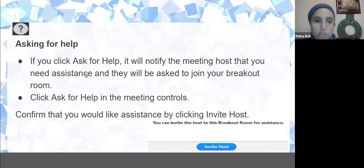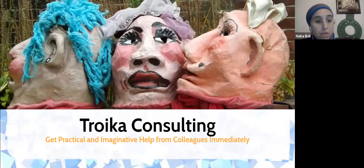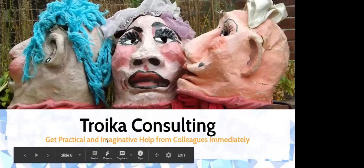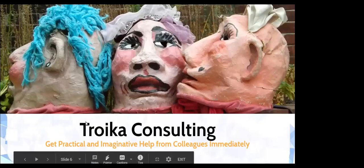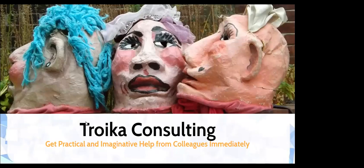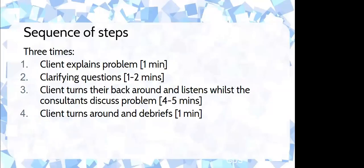"Troika" means three in Russian, and it's designed to help you get practical, imaginative help from colleagues immediately. It doesn't require an expert — just anyone. For students, it can be an opportunity to get help from each other, building community and helping them learn to learn from one another without needing an expert every time they have a problem.